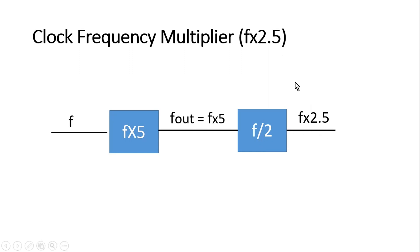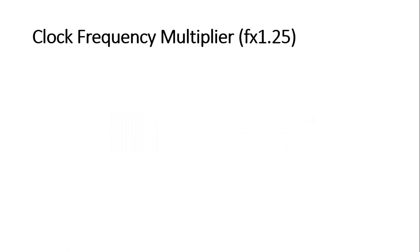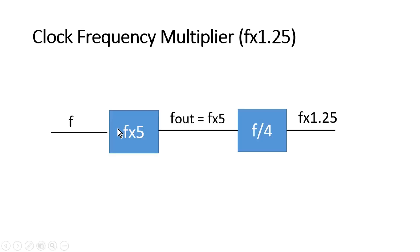Now a more difficult level challenge: design a clock frequency multiplier that multiplies the input clock frequency by 1.25. You can try to think of the answer and write it in the comment section. In its design, I use a frequency multiplier that multiplies by 5, giving F × 5. Then I use a frequency divider that divides by 4. So 5÷4 = 1.25, which meets the expected result.